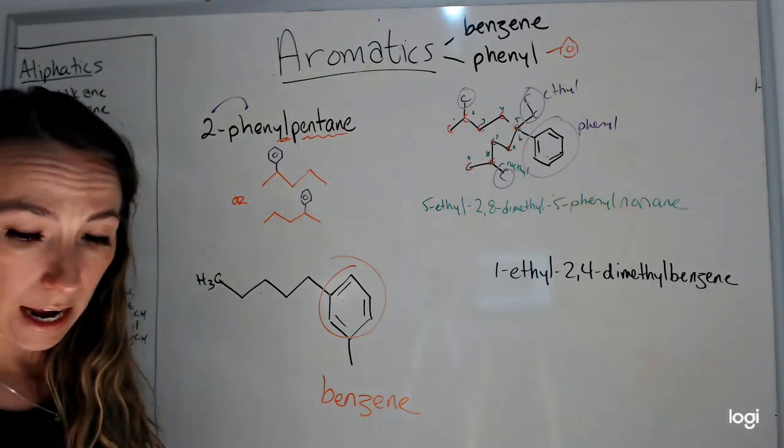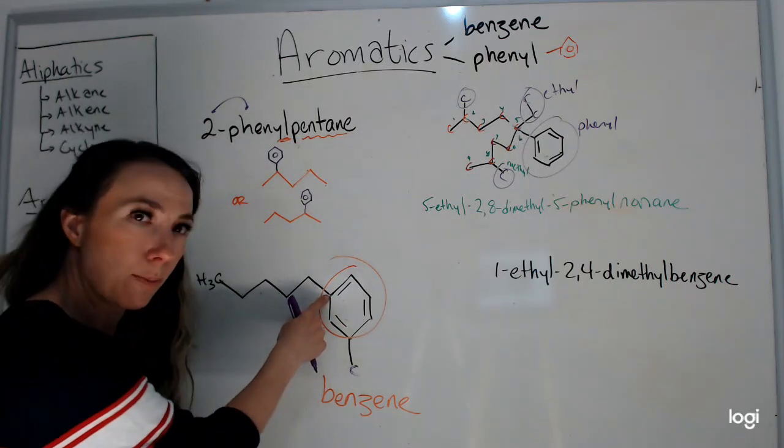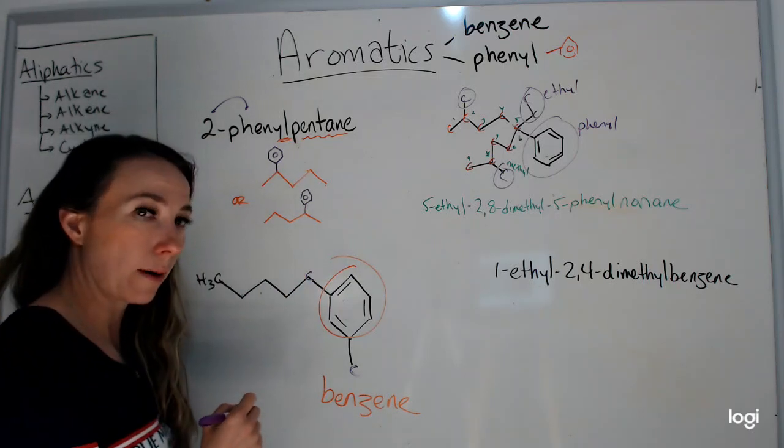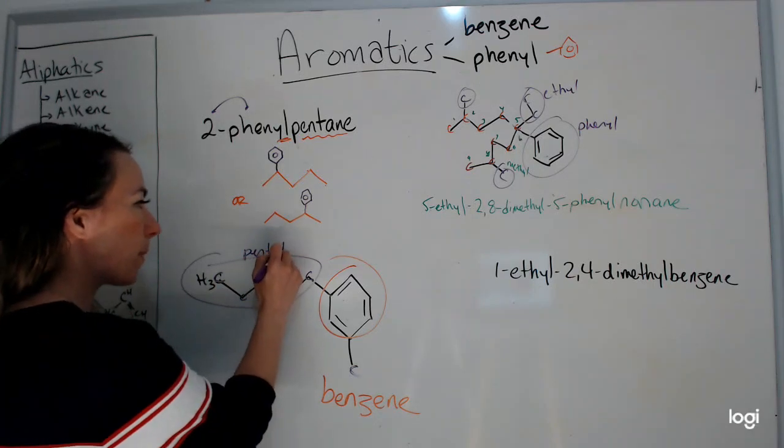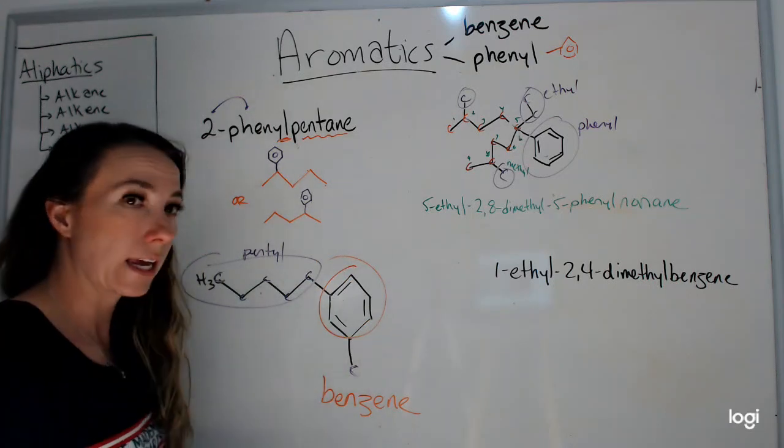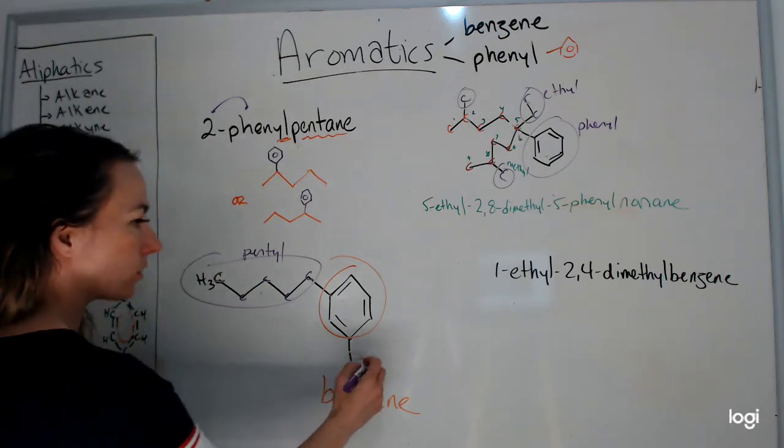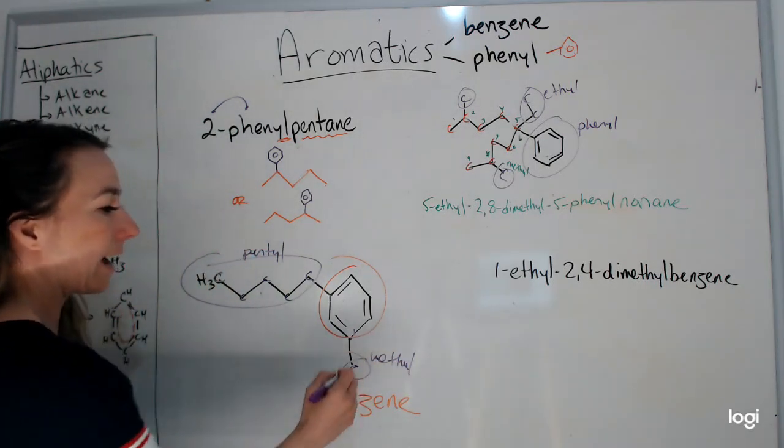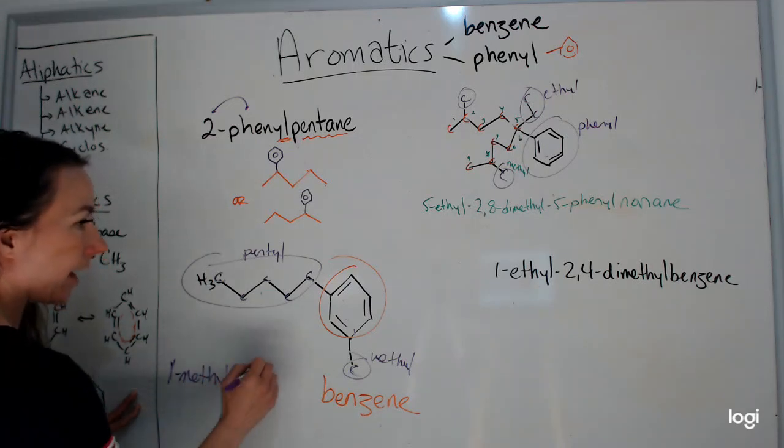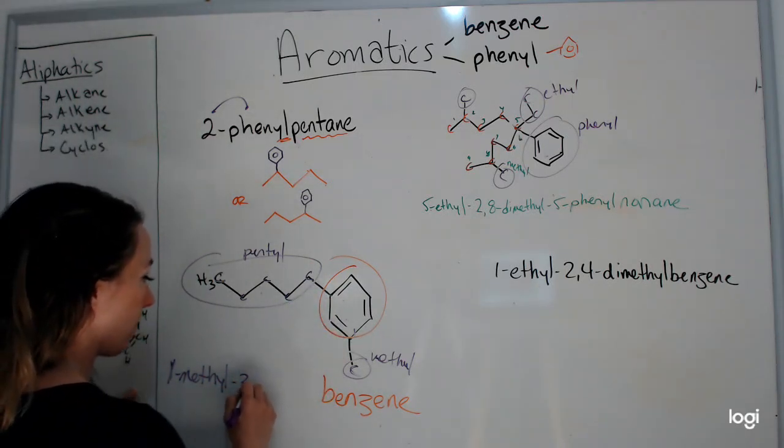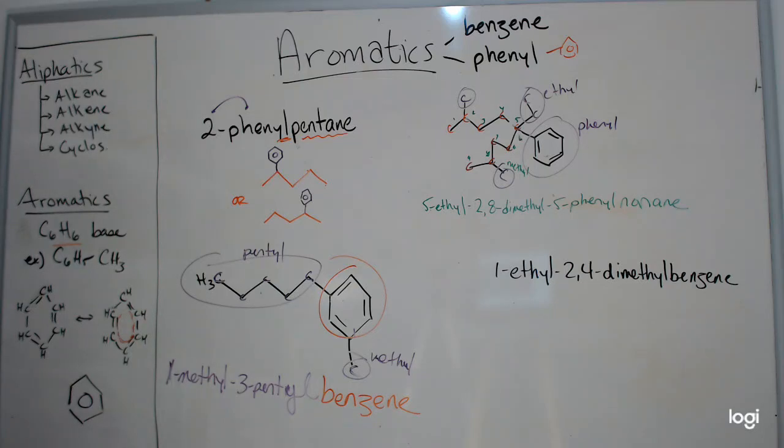And so now then I have my two branches. I have a methyl branch here and I have, okay, this is super important. Don't count that as part of your branch. That's what students will do. Whereas this is the start of my branch. So one, two, three, four, five. So this is a pentyl branch, not a hexyl branch. That's already included it in my benzene parent chain. Okay. So pentyl and methyl L-M-N-O-P. So methyl gets written down first. So I'm going to designate that as my carbon one. So this is going to be like a one-methyl. And then two, three, so three-pentyl. P-E-N-T-Y-L benzene. So one-methyl-three-pentyl benzene.